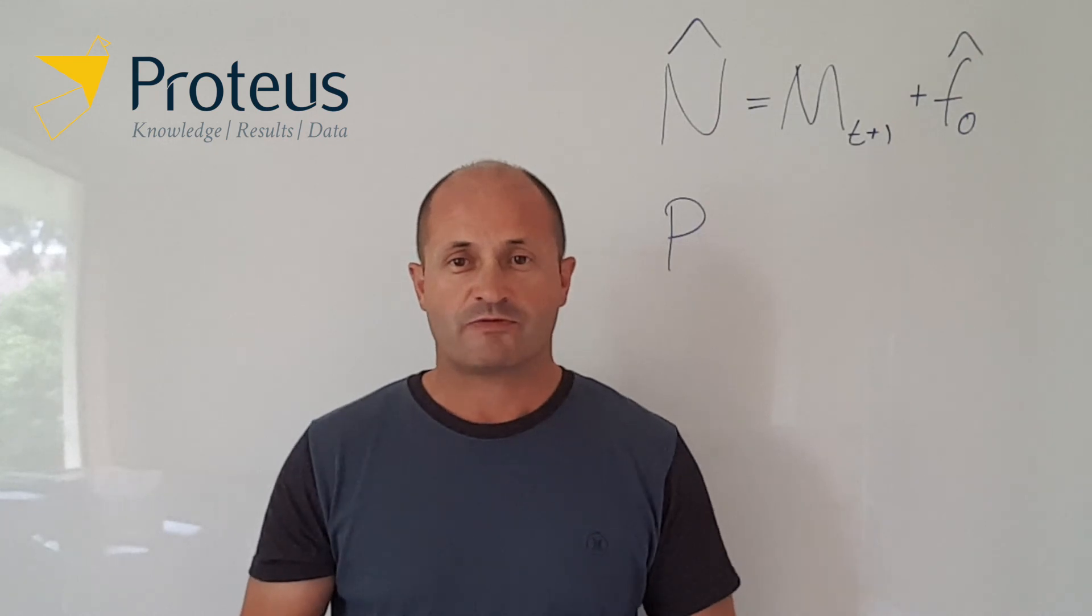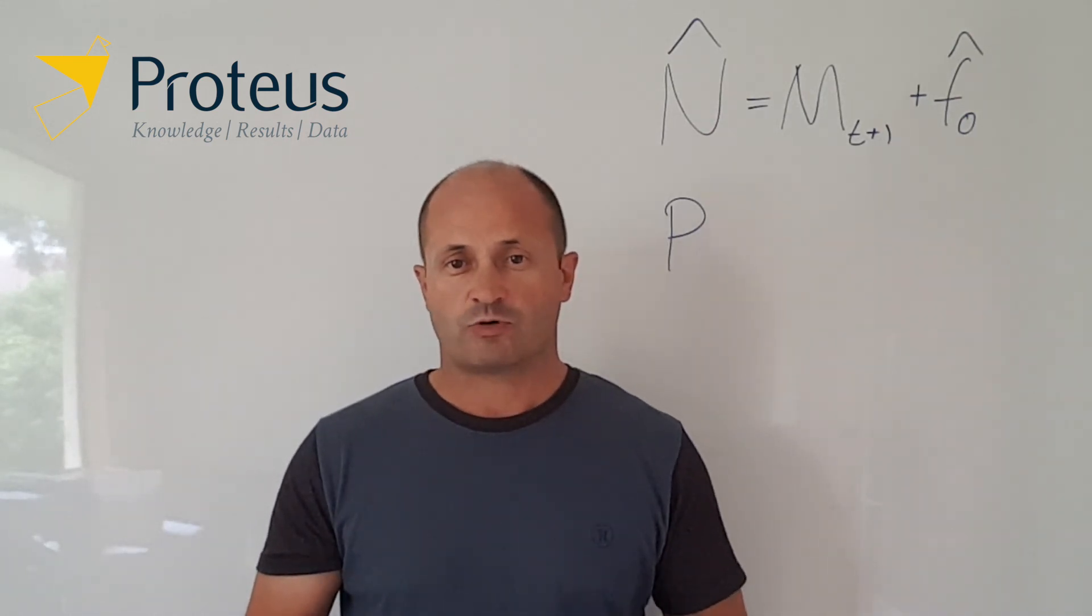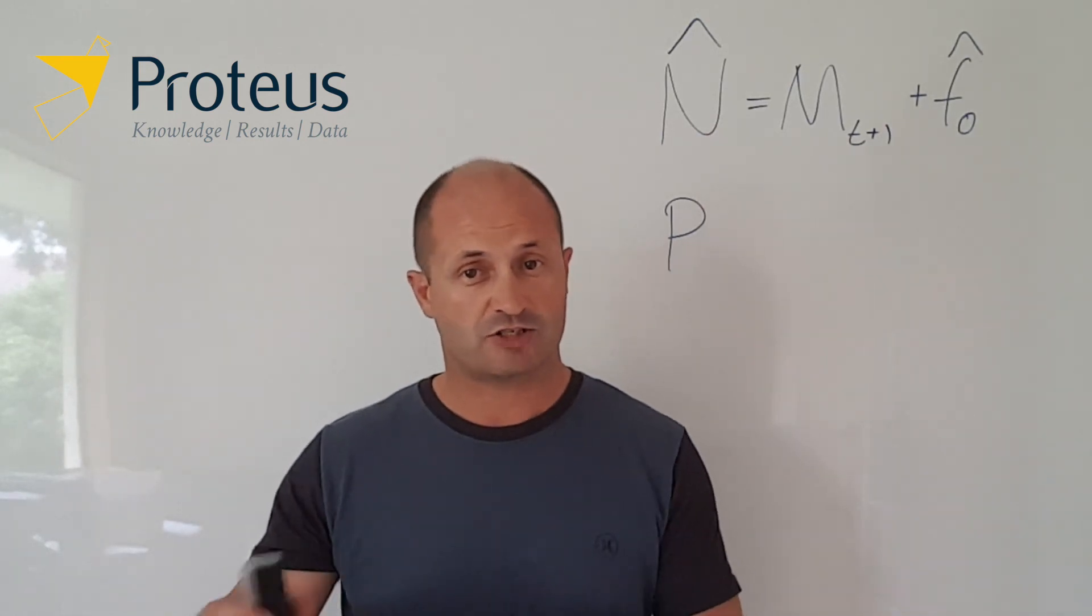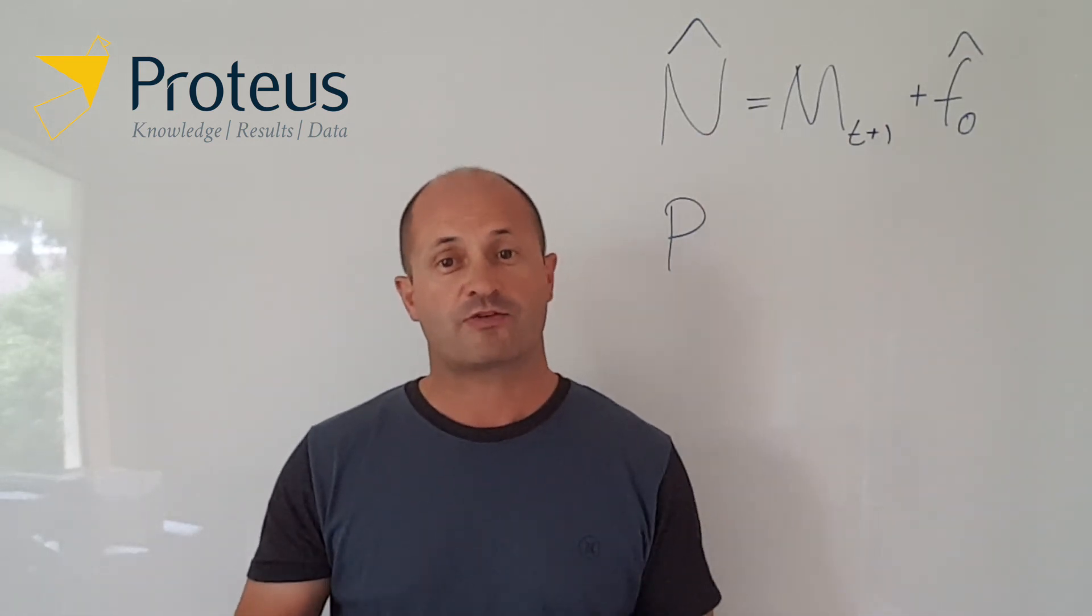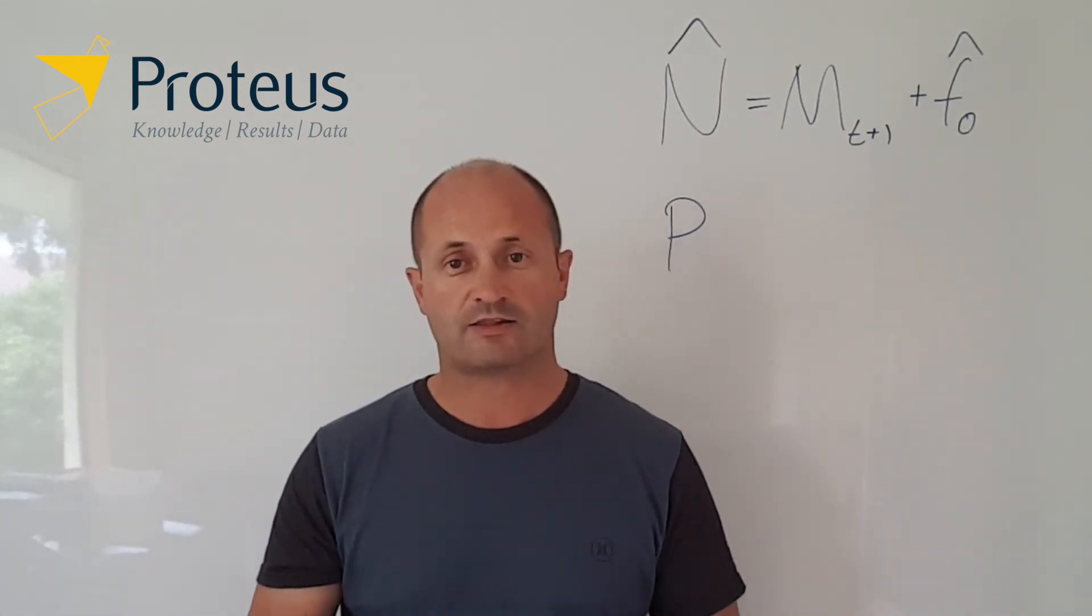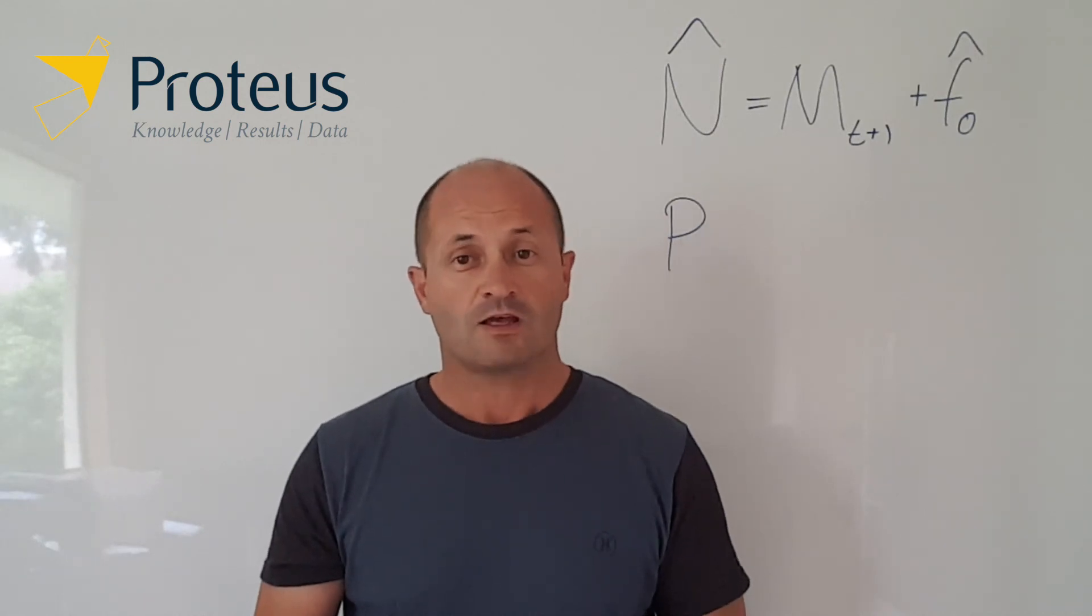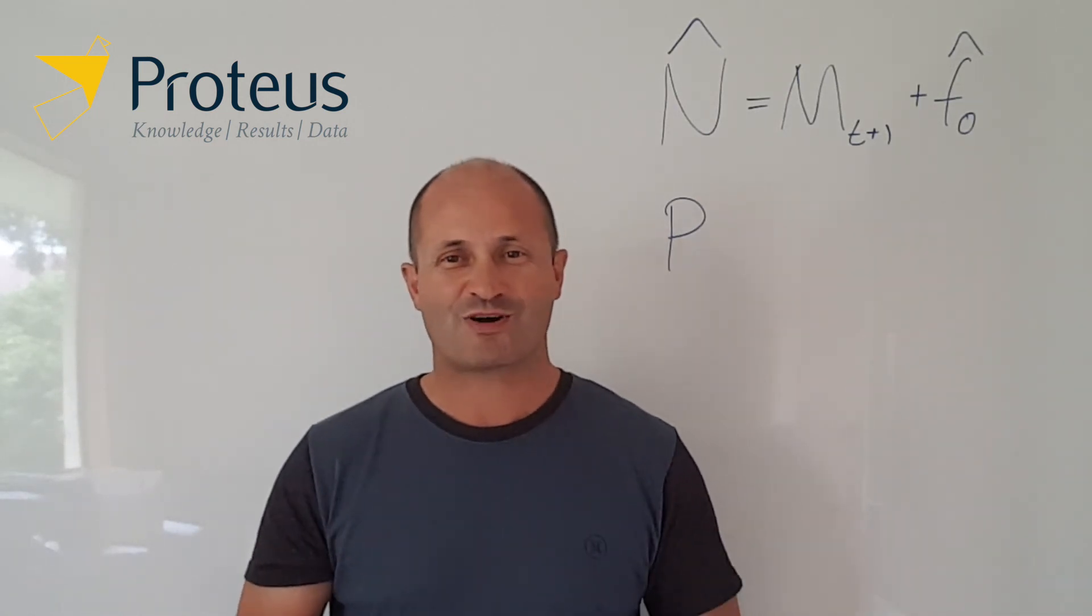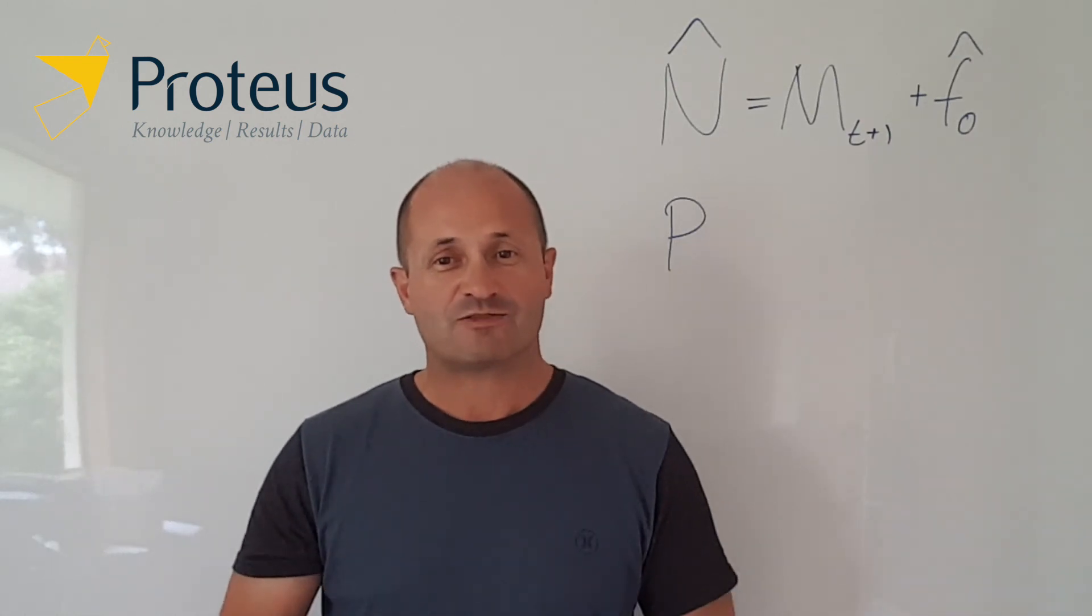So there you have it, I hope you found that useful. All these results are based on what we call the M0 model, which is when capture probability is assumed to be the same for everybody, for all the animals out there. There are other mark-recapture models that can be used and these results may not hold quite like that, but the same idea can be applied. If you want to see a bit more detail and look at some of the R code that's been used to generate these figures, then look at our news tips and tricks page on our Proteus website, and feel free to explore some of the other posts out there as well. So thanks for your attention. I hope you found that really useful.